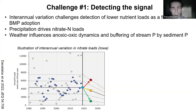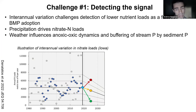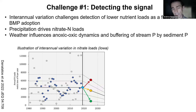I'm going to walk through three challenges because the abstract talked about examples of non-fertilizer and non-point source losses of nitrogen and phosphorus. I'll focus mostly on phosphorus today, but I want to give a flavor for three challenges that cut across nitrate loss reduction as well as phosphate loss reduction goals.